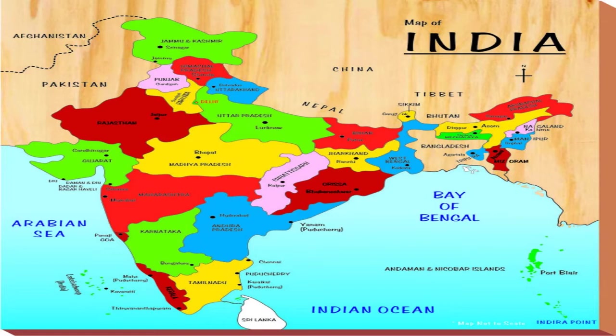Which is our state? Tamil Nadu is our state. Tamil Nadu's nearby neighbouring states are Kerala, Telangana, and Karnataka. These are all the nearby states of Tamil Nadu.